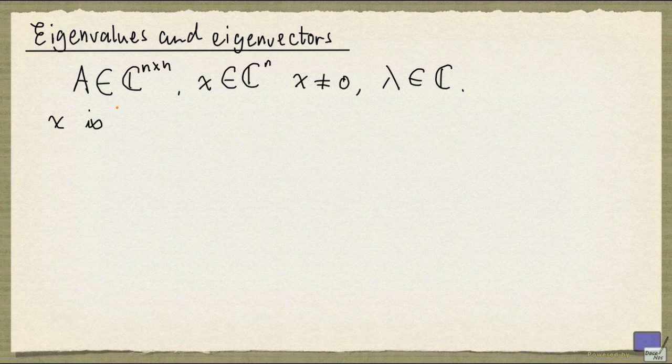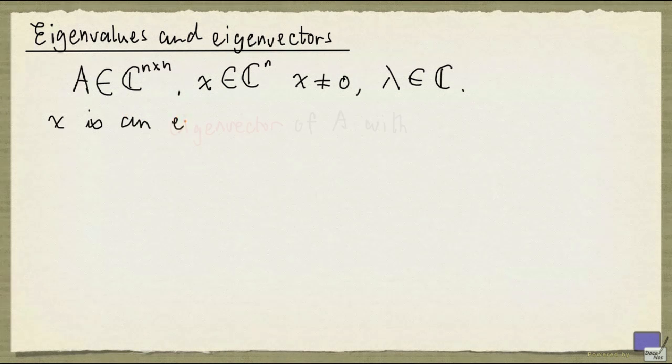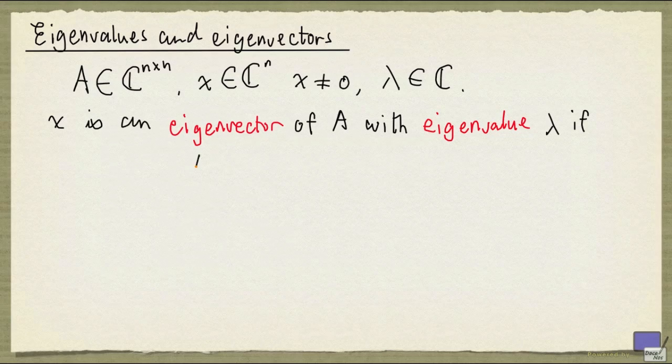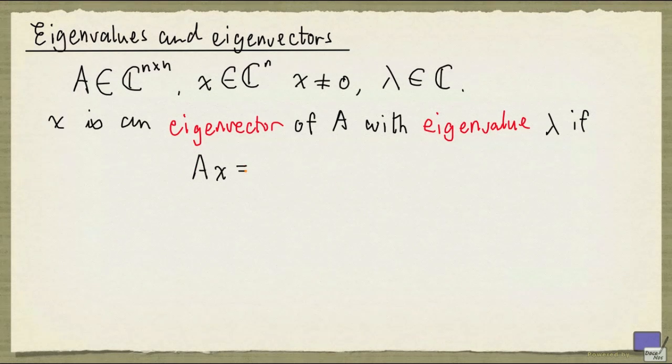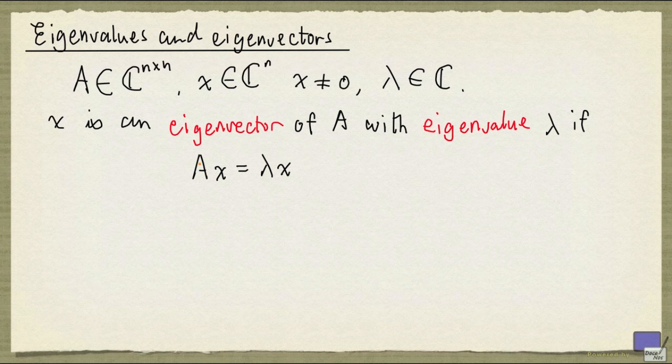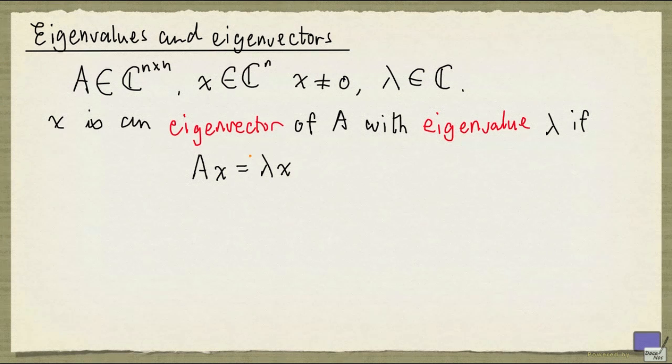We say that x is an eigenvector of A with eigenvalue lambda if the following holds: Ax equals lambda times x. In other words, if x is an eigenvector of A, then A times x is simply a scalar multiple of x. Now notice that by definition, the zero vector is never an eigenvector because we require the vector to be nonzero.